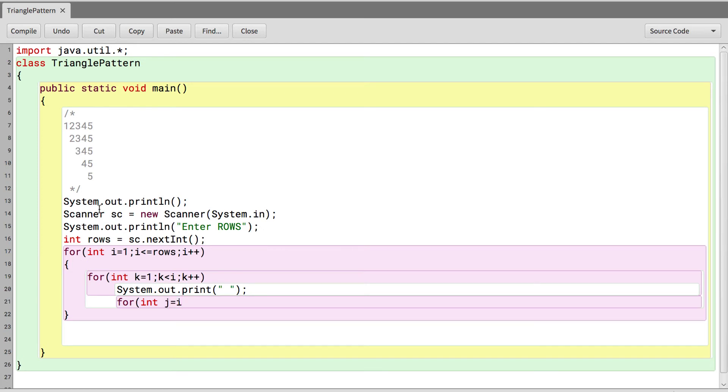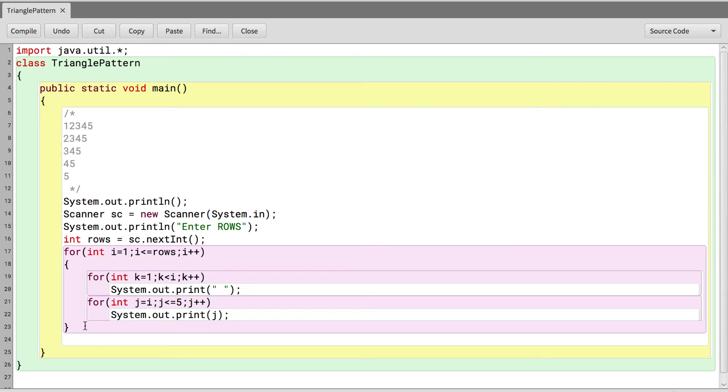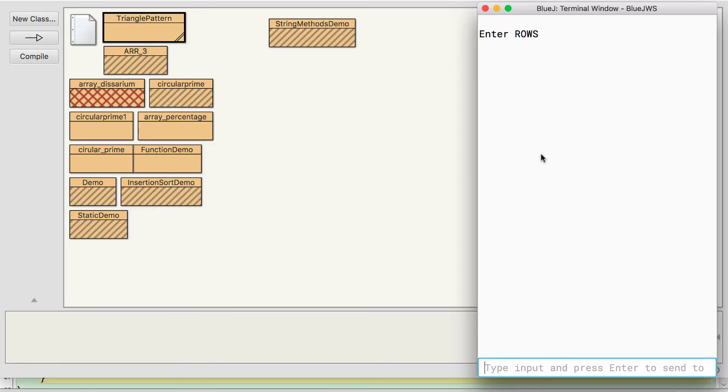And then we have a loop which is j, which again starts from i every time. And I say j less than equal to 5 because the ending value is constant, and j plus plus. And we just print the value of j. So let's indent, and then before we end this loop we also need to write the print ln. Done.